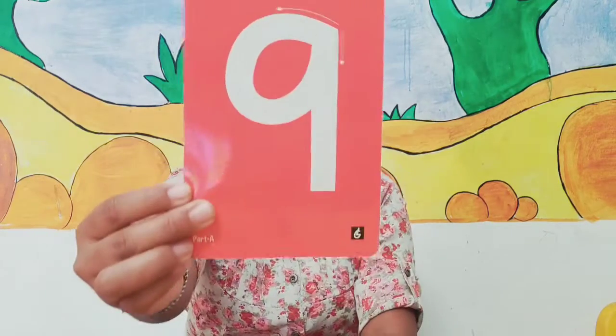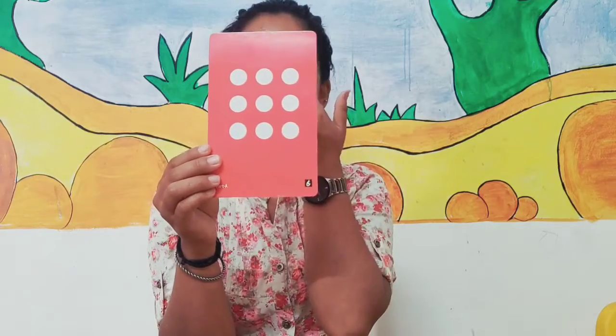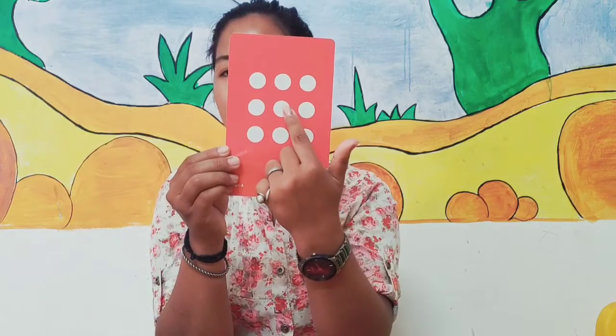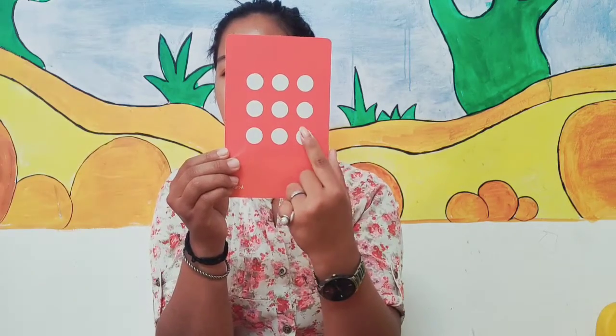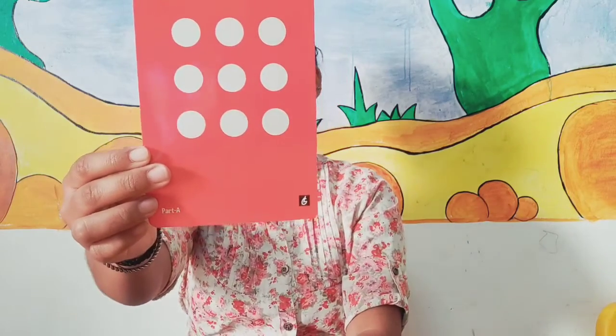Now next number is 9. Which number is this? You tell me. Say 9. Very good. Now let's count the dots: 1, 2, 3, 4, 5, 6, 7, 8, 9. These are 9 dots and this is number 9.